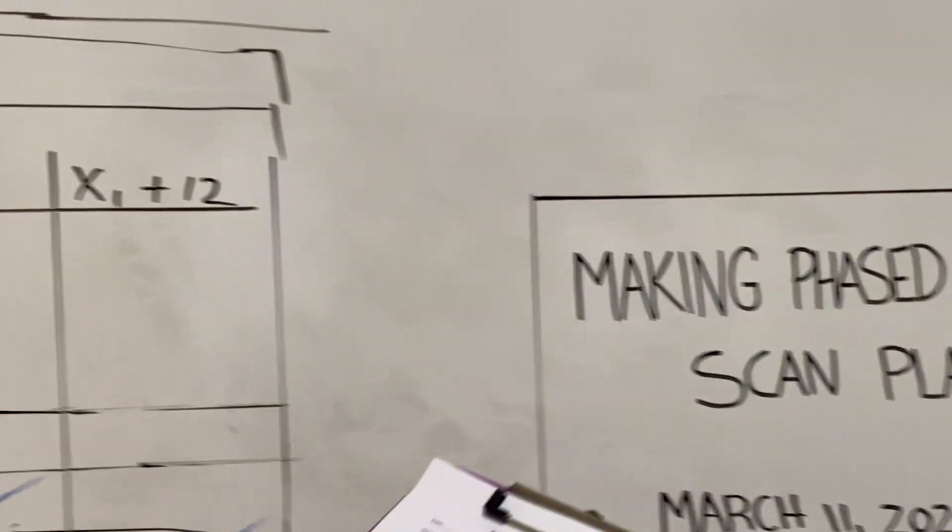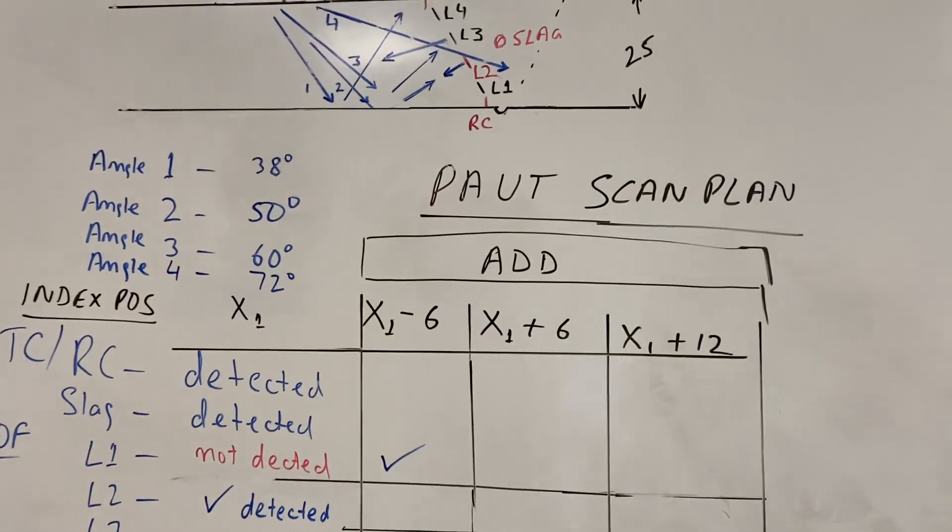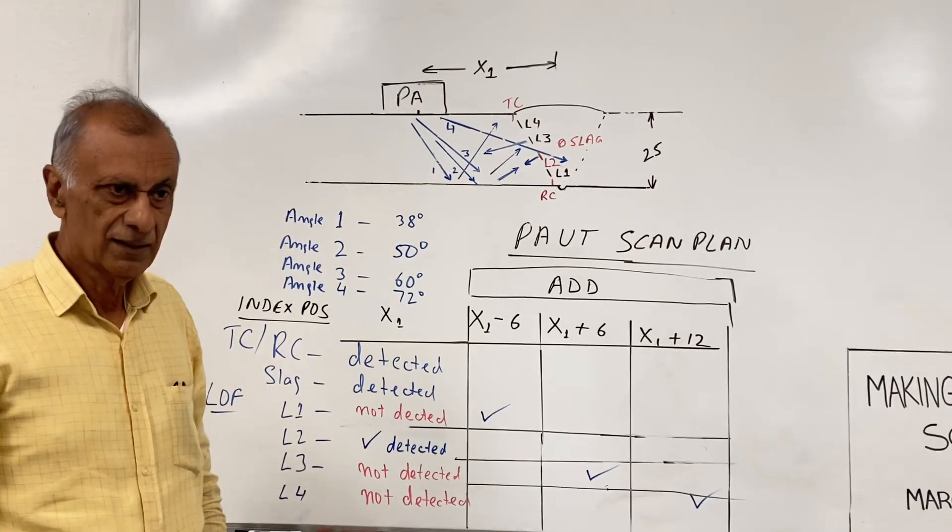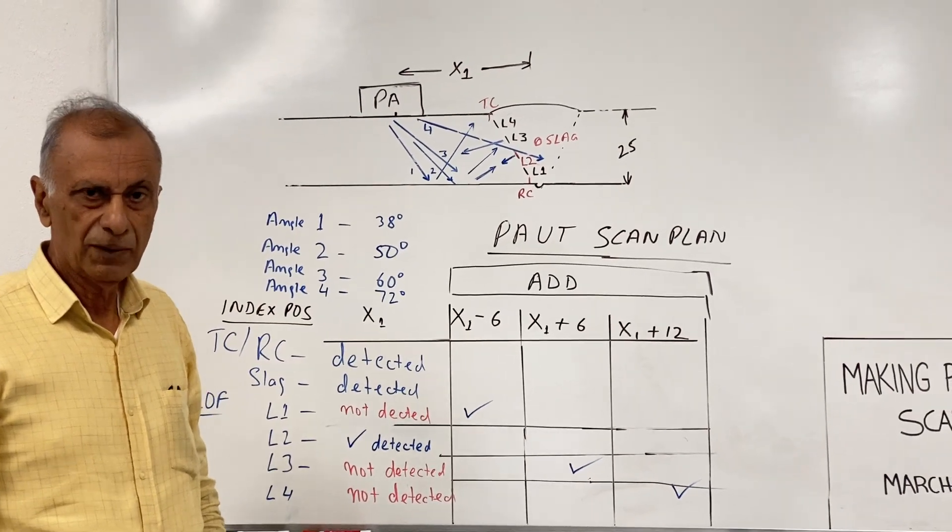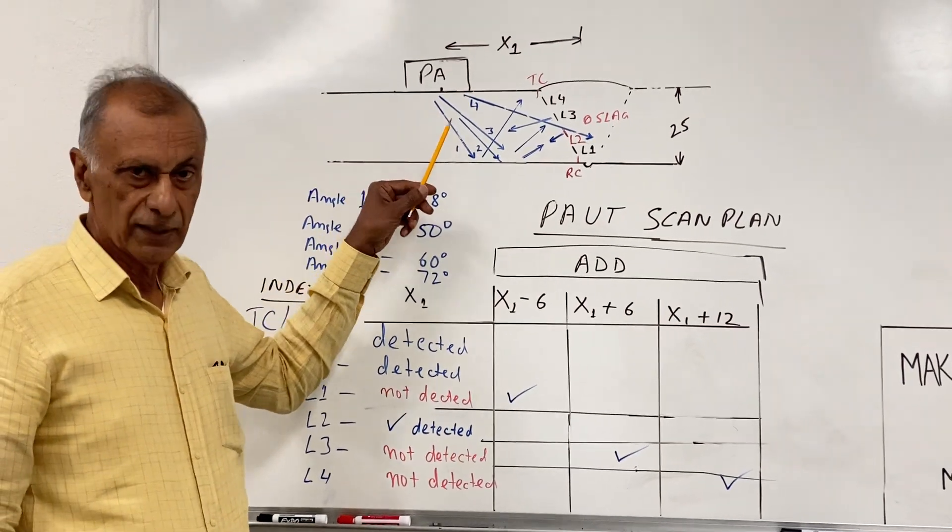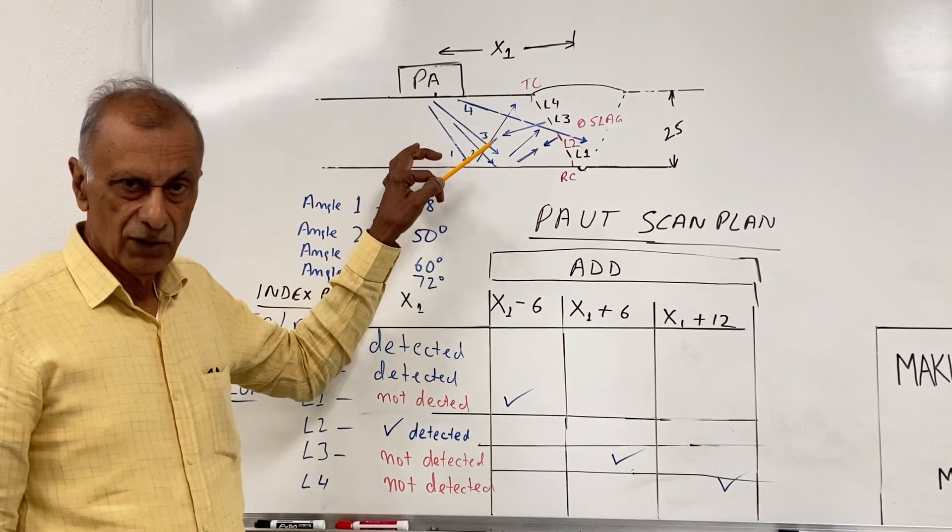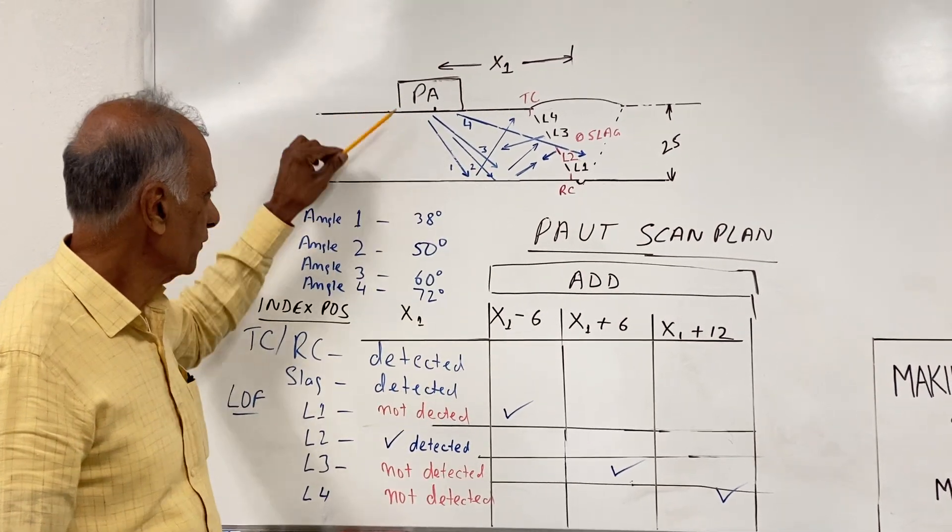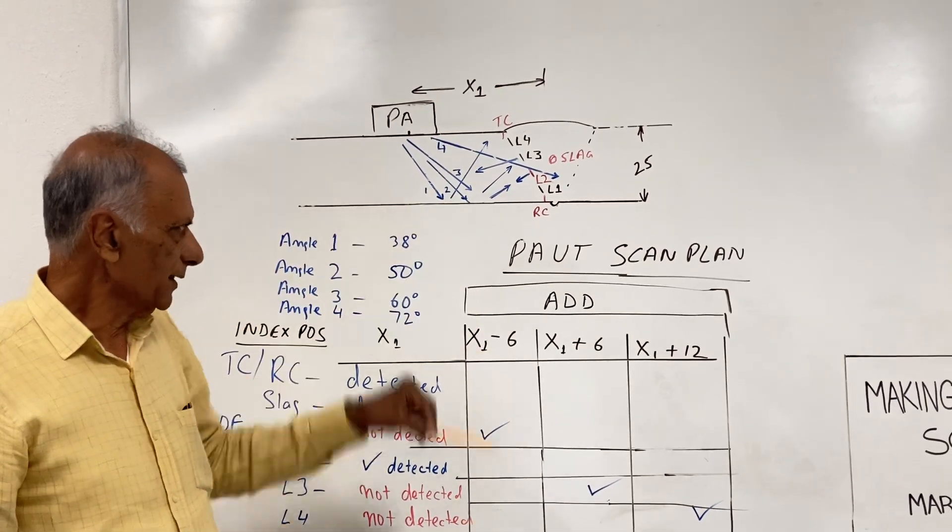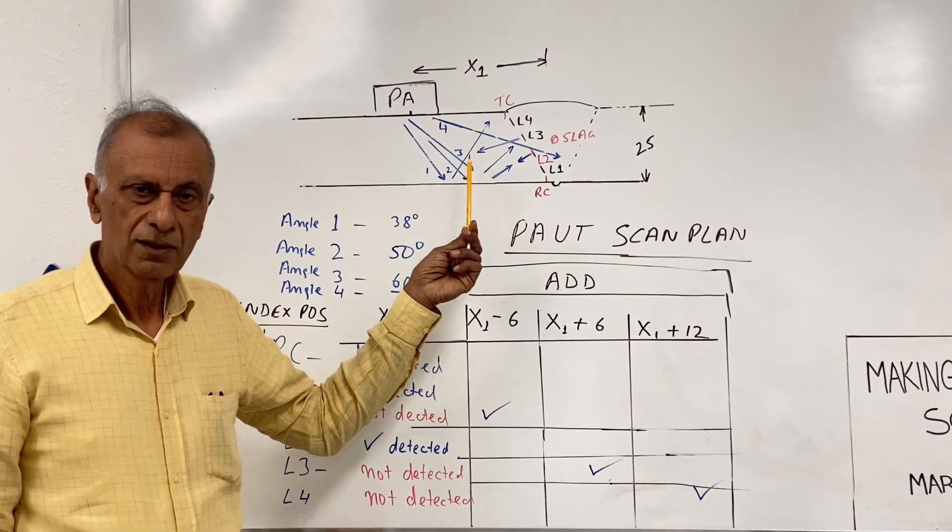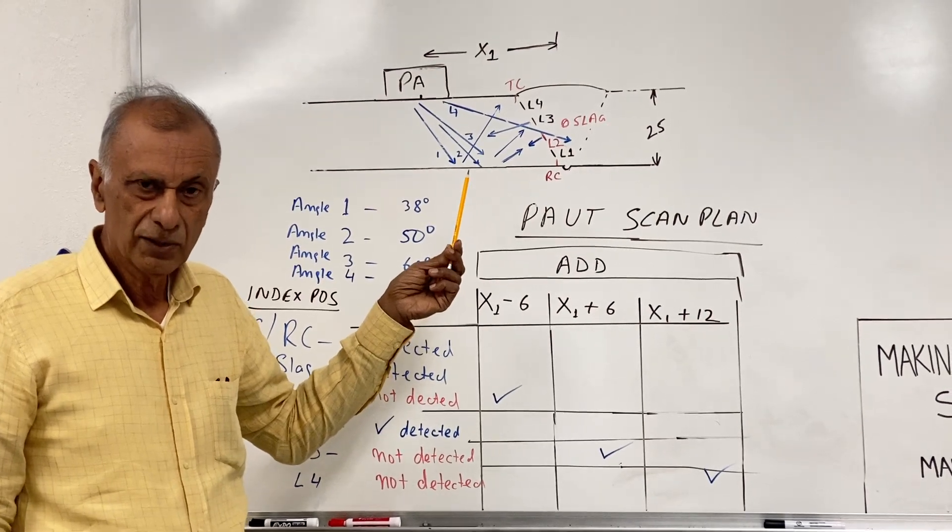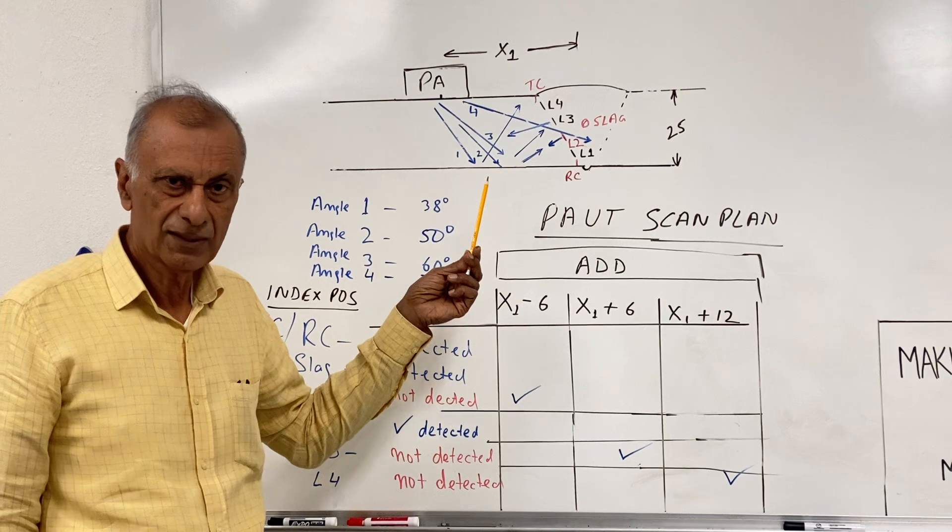Now let's go to the next step, which is the scan plan. This is a very big issue right now as far as the scan plan is concerned. What I've seen is that many people will show a scan plan with a probe sitting here, and they will show that the whole weld is getting illuminated. They will have a scan plan from 40 degrees or 38 degrees to 72 degrees, and they will show these angles, and they will show that the whole weld has been flooded with sound or has been illuminated with sound. So they are saying that they are getting full 100% weld coverage.